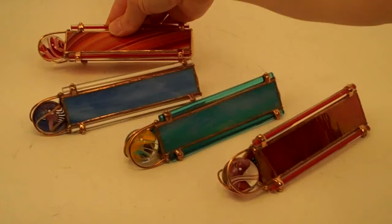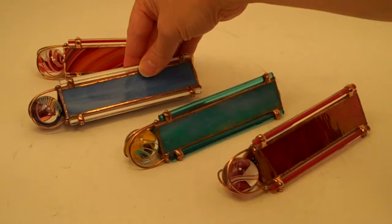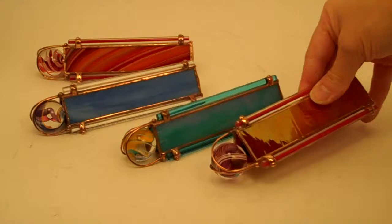Now the first one here, this is what she calls her chips and salsa glass with this beautiful flame red and white swirl, a light blue iridized, we have an aqua iridized and then a beautiful rich red iridized.